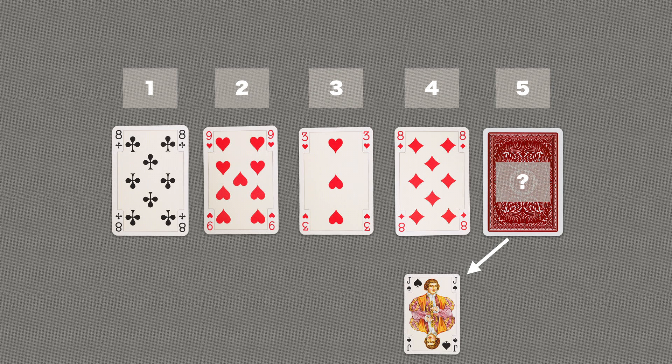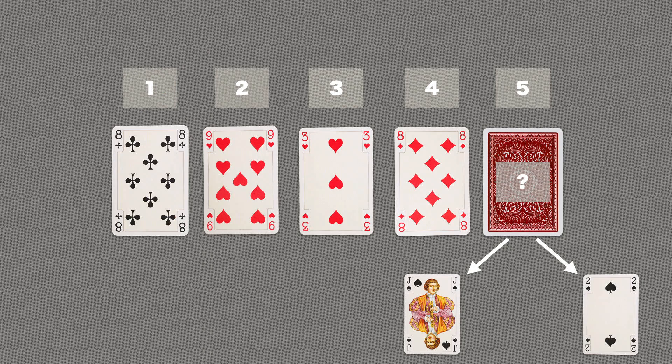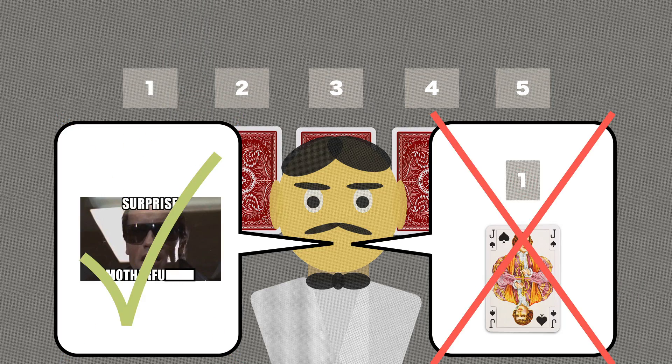Either the last card is indeed a jack and the dealer lied about his second statement, or the last card is not a jack, which makes the dealer's first statement a lie. Both can't be right.